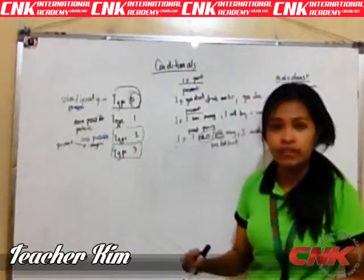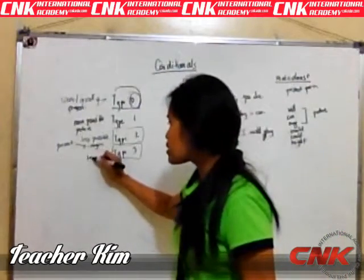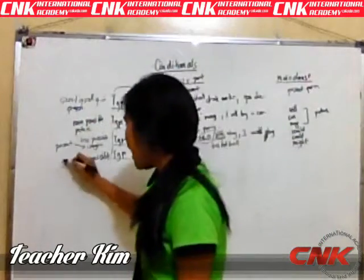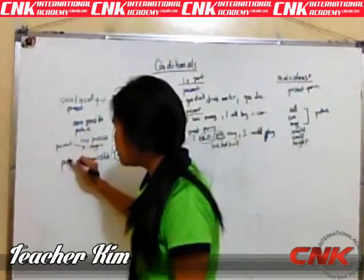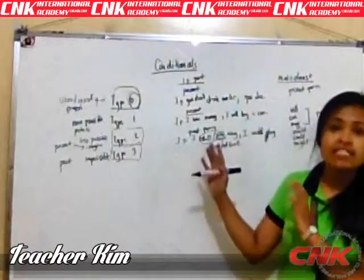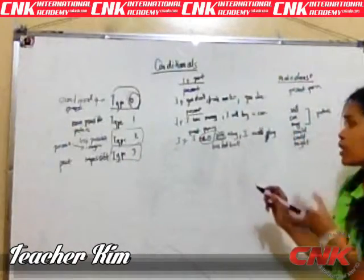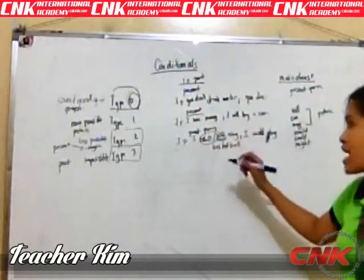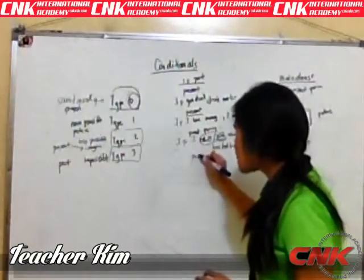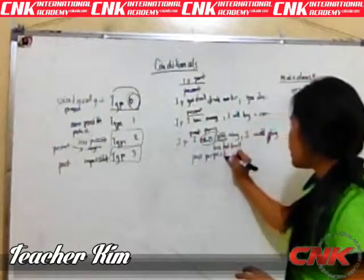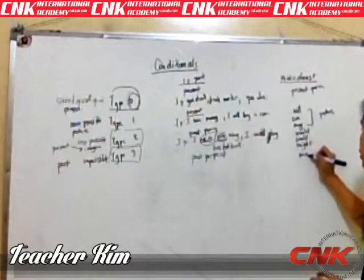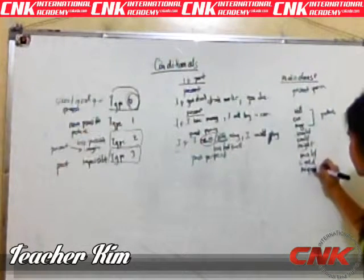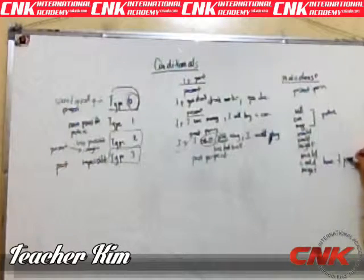Let's proceed with Type 3. With Type 3, it is impossible to happen. Why is it impossible? Because it is going to happen in the past, and you can't go back in the past — that's why it is impossible. In Type 1 you use present; in Type 2 you use past; in Type 3, you use past perfect. And in the main clause, you can use would, could, or might, followed by 'have' plus the past participle.